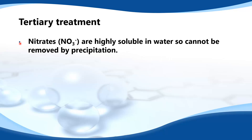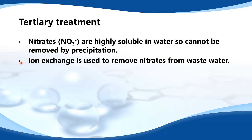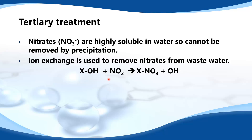Nitrates are highly soluble in water, so cannot be removed by precipitation. Ion exchange is used to remove nitrates from wastewater. Here's an example of ion exchange where the hydroxide ion, the OH- ion, is exchanged with the NO3- ion, the nitrate ion.